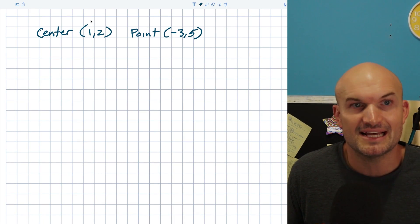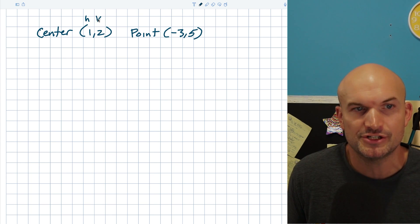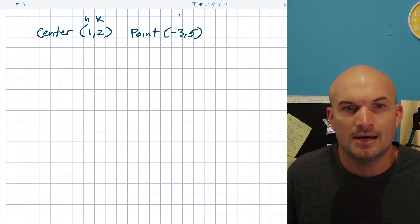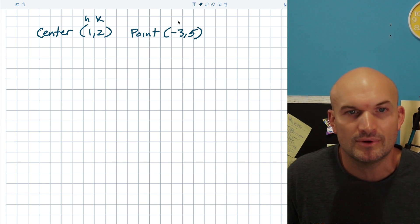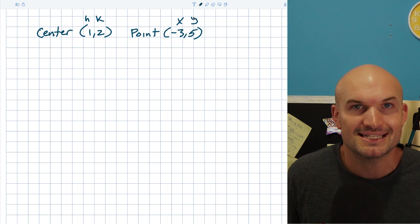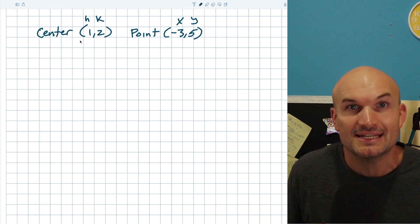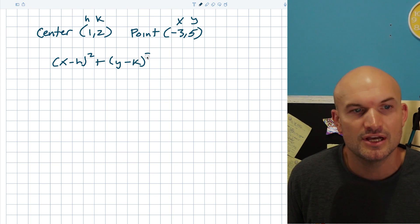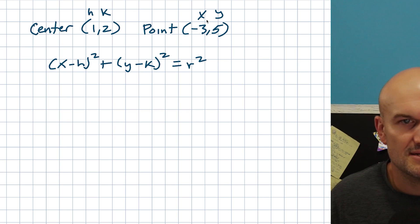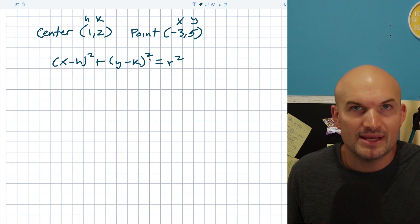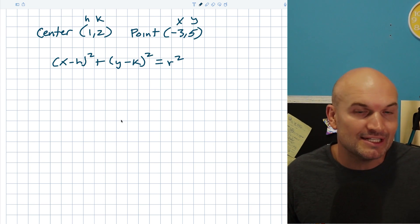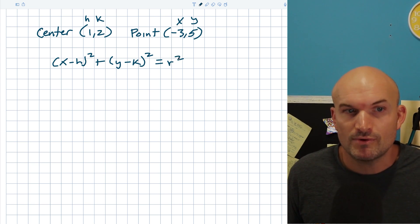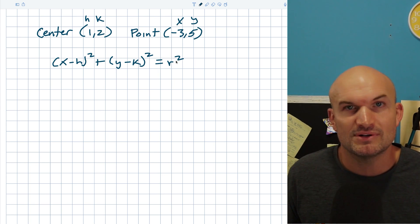In this next example, we have a center and a point that lies on the circle. We know the center gives us h and k, and the point gives us x and y. The only thing we don't know is the radius, r. But if we plug everything into (x − h)² + (y − k)² = r², we have all the values and can just solve for r².